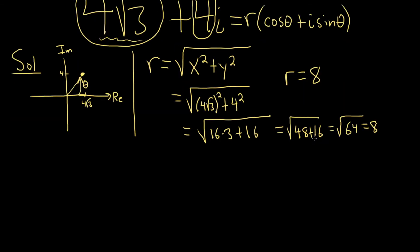So let me go ahead and plug that in to what we have. So we have 4 square root of 3 plus 4i equals 8, that's our r, parentheses cosine theta plus i sine theta. So now we just need theta.